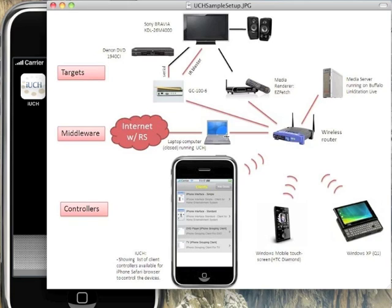UCH runs on most operating systems like Mac, Windows, and Embedded Linux, and connects to all these devices in the network. It provides client controllers which can run on intelligent devices like iPhone, iPod touch, Windows mobile PDA, tablet PC, or a regular PC.